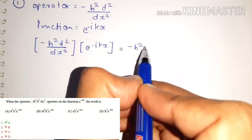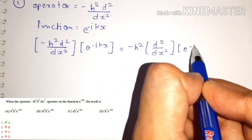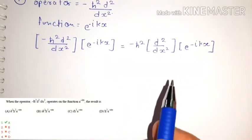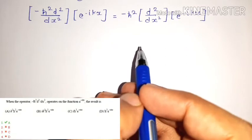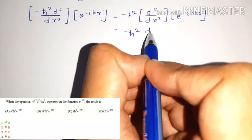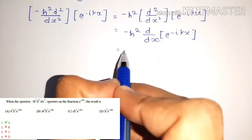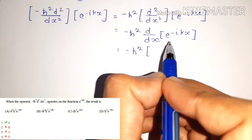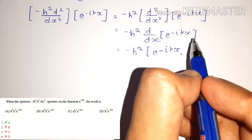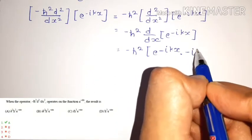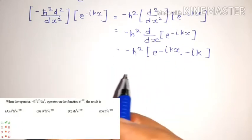First, take minus ℏ² outside. We have the operator d²/dx² and the function e^(-ikx). This means we need to do a double differentiation of e^(-ikx). So first, do the first differentiation: minus ℏ² d/dx of e^(-ikx) gives minus ℏ² into e^(-ikx) times minus ik.